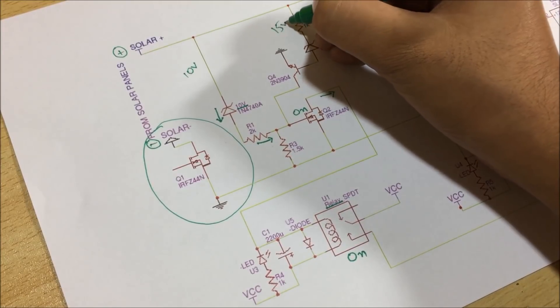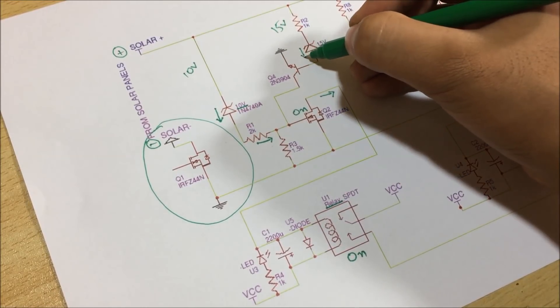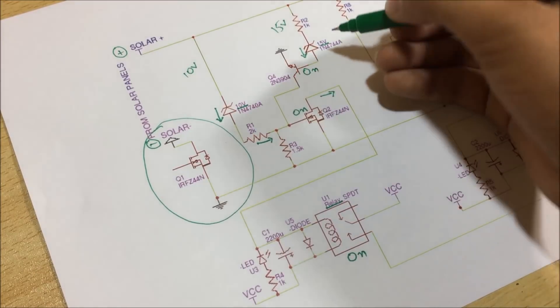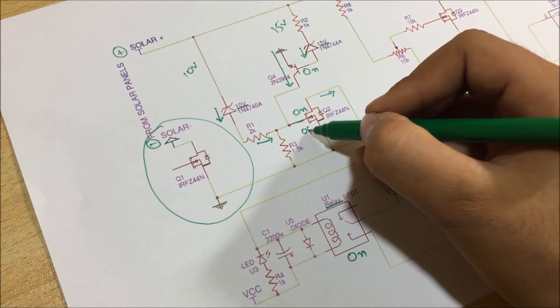Now, for the over voltage protection, whenever the panel voltage reaches 15V, this zener diode reaches its conduction state. Hence, the transistor also reaches the saturation state. Negative voltage flows through it and thus turns off the MOSFET.